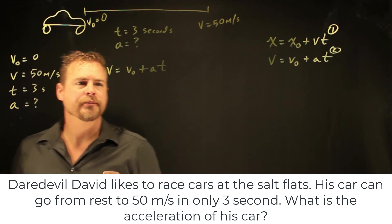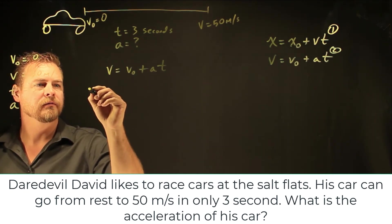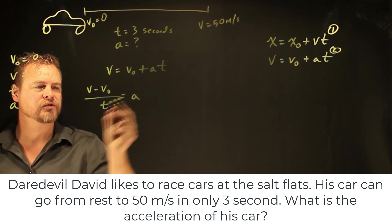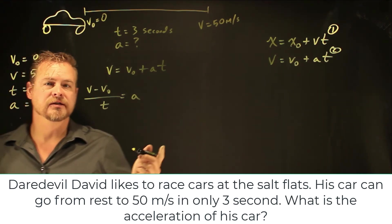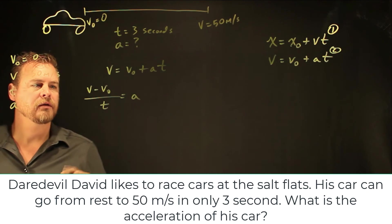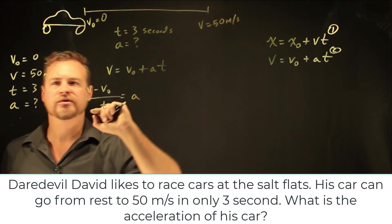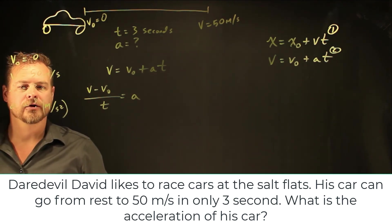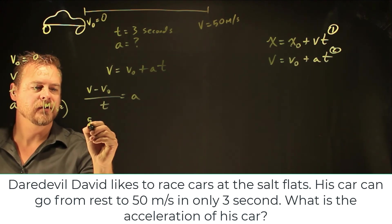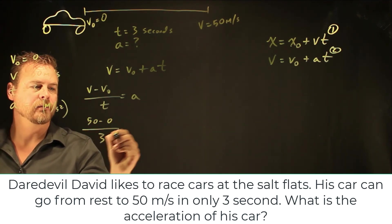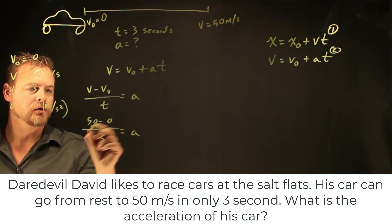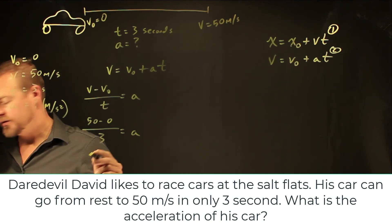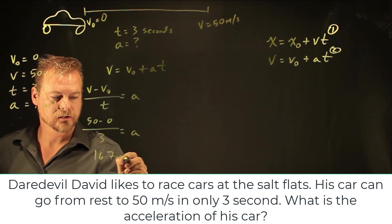I need to put this in terms of A. And so V minus V naught over T is equal to A. I've skipped a few steps in here. And then the next is I'm going to plug in my numbers, checking for any conversions. I've got seconds, meters per second, and acceleration will end up being in meters per second squared. And so all my units are good. And so I'm going to plug them in. So I've got 50 minus 0 over 3 is equal to A. So that becomes 50 divided by 3, which is 16.7 meters per second squared.